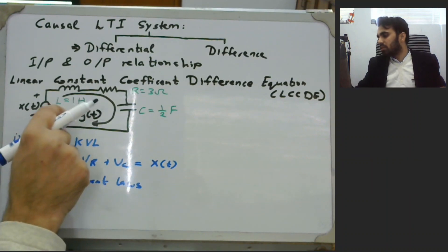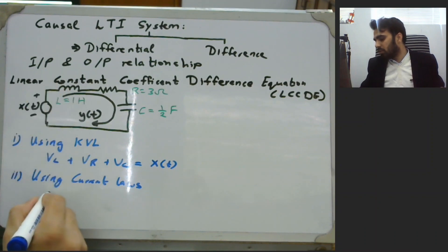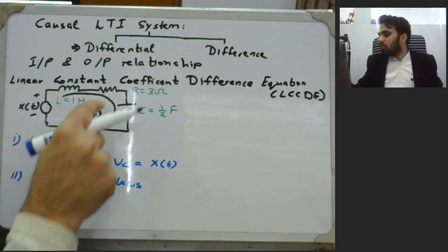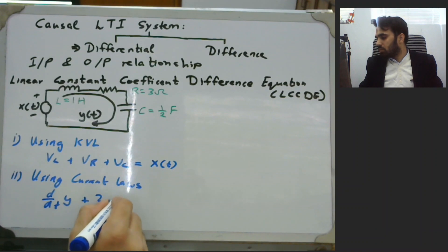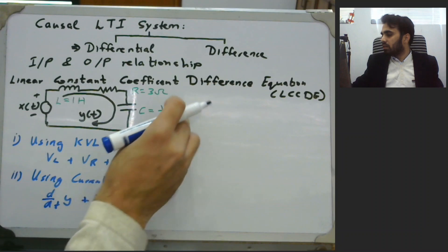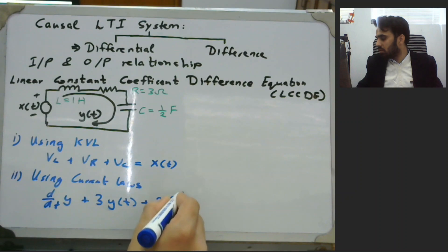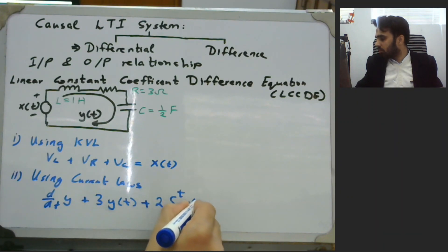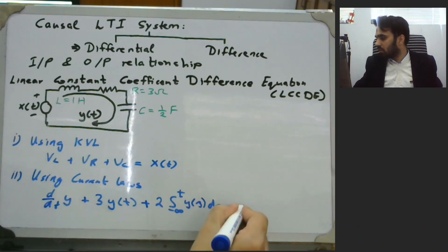Using KVL and the current laws, we can express this as L·d/dt·y(t) — since L is 1, this is simply d/dt·y — plus, from Ohm's law, 3 times the current y(t), plus 1/C times the integral from minus infinity to t of y(τ)dτ, and this equals x(t).